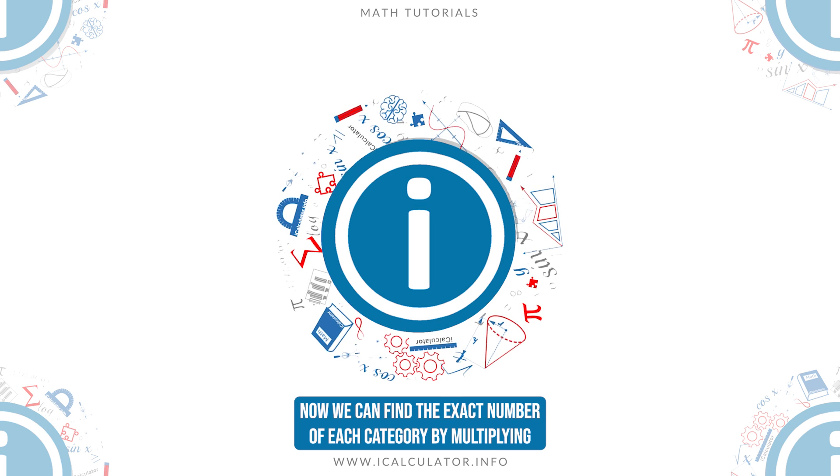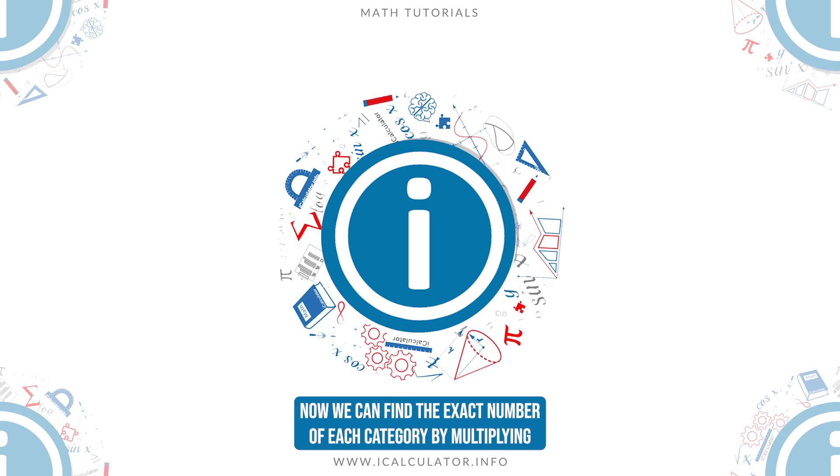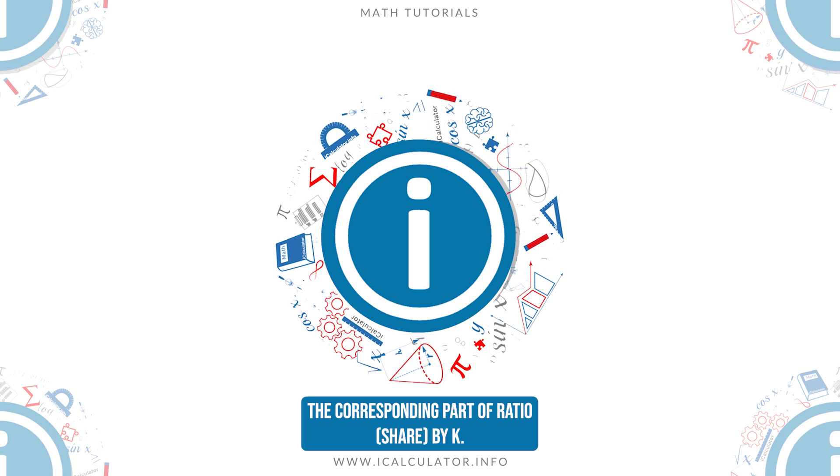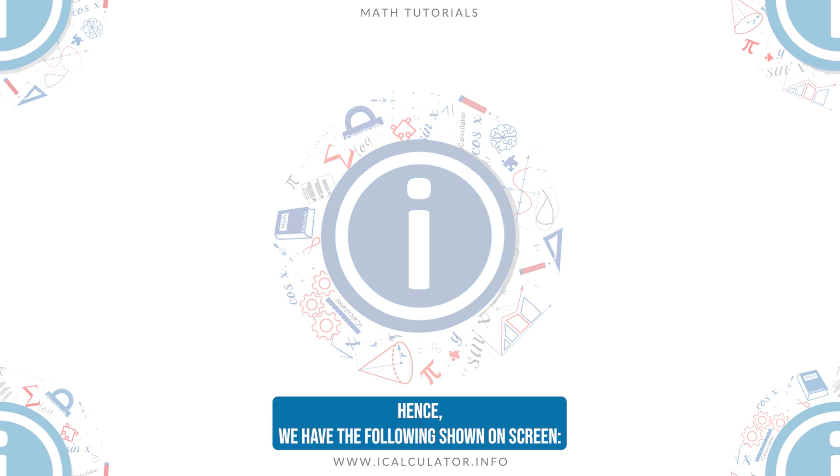Now, we can find the exact number of each category by multiplying the corresponding part of ratio (share) by K. Hence, we have the following shown on screen.